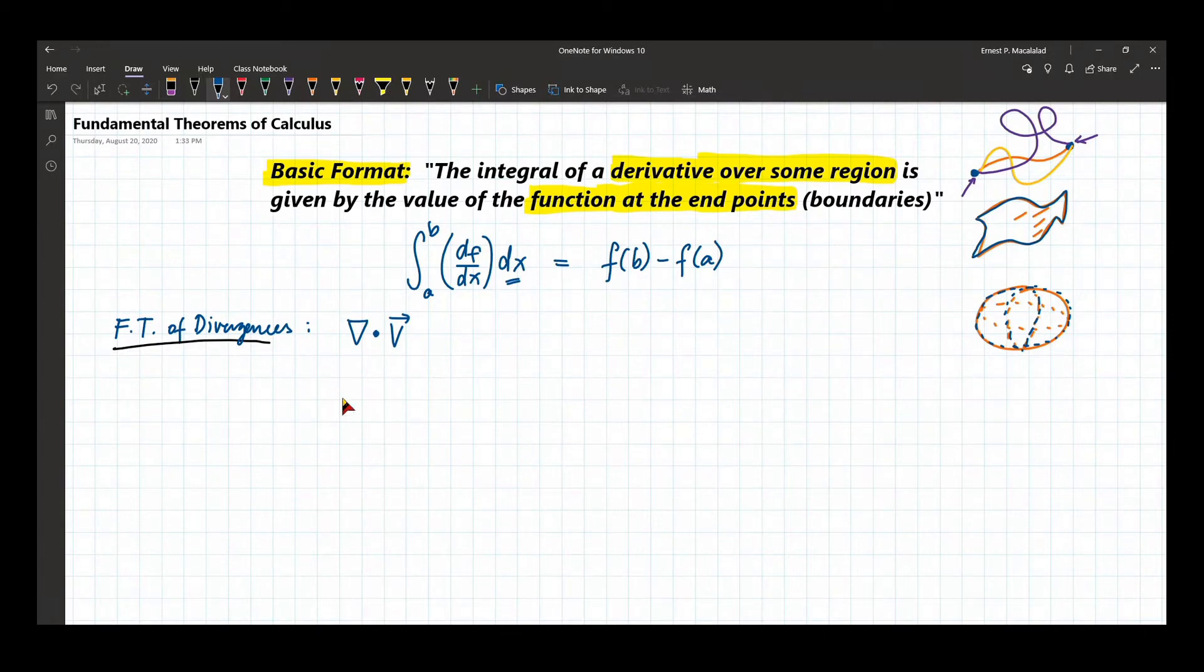So in mathematical form, that means the volume integral of the divergence of V over some volume V is the same as getting the surface integral of that function V.